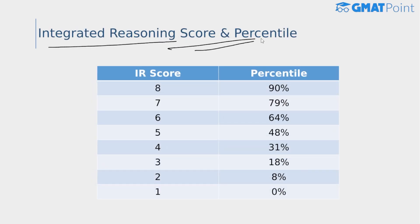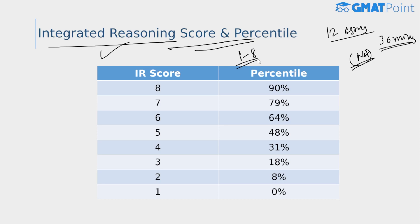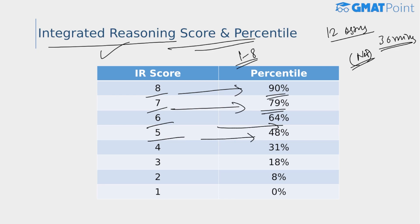Next, we have the integrated reasoning section scores versus percentiles. This section consists of 12 questions in 30 minutes and is not computer adaptive — only the quant and verbal sections are computer adaptive. It includes questions from multi-source reasoning, graphical interpretation, two-part analysis, and table analysis. The IR score ranges from 1 to 8 in one-point increments. For a score of 8, the percentile is 90; for 7, it's 79; for 6, it's 64; for 5, it's 48; and for 1, the percentile is 0. The integrated reasoning score is provided as an independent score and is not included in your total GMAT score.